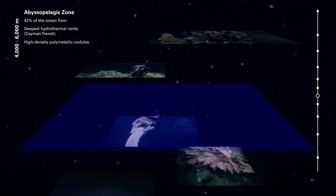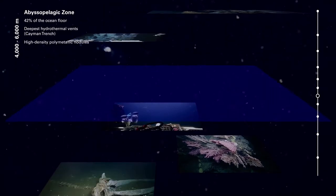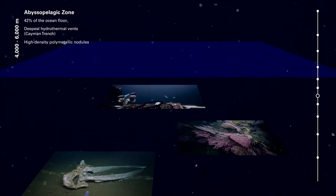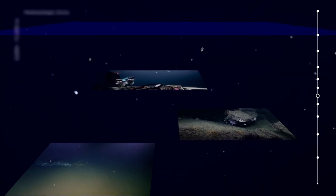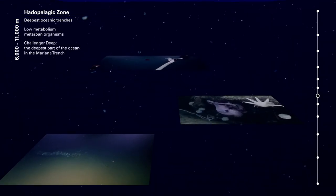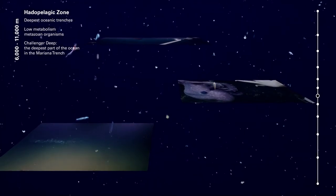Hydrothermal vents are just one of various types of geological formations where deep sea mining is said to take place. Other targets are the cobalt-rich seamount crusts and the polymetallic manganese nodules spread along the ocean floor.